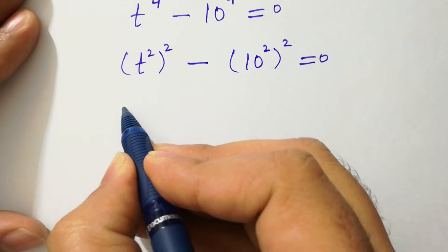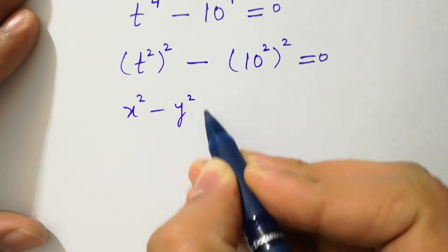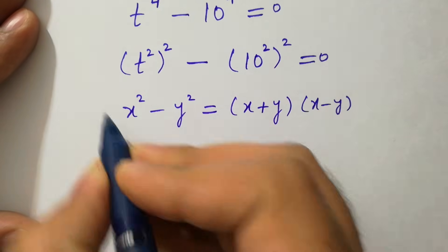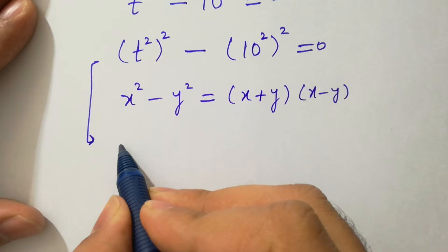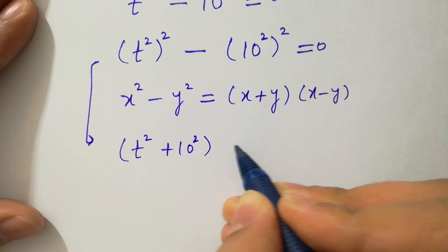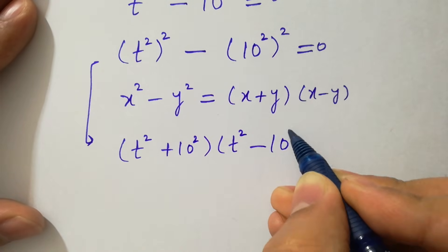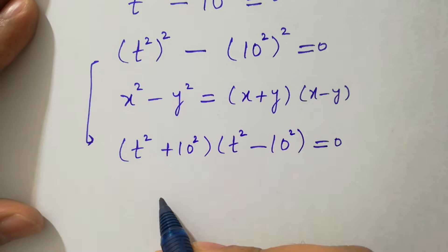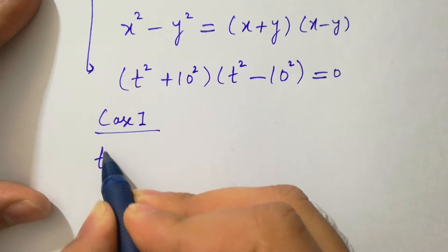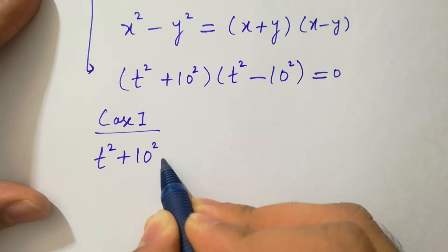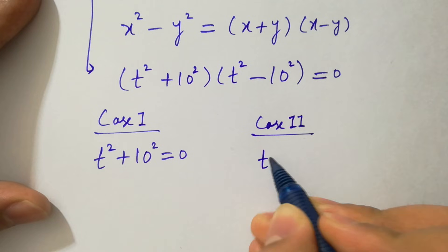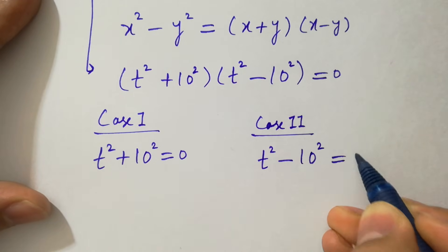We know the formula x square minus y square which is equal to x plus y times x minus y. Applying this formula, we have t square plus 10 square times t square minus 10 square equal to 0. We have two cases here: case one is t square plus 10 square equal to 0, and case two is t square minus 10 square equal to 0.